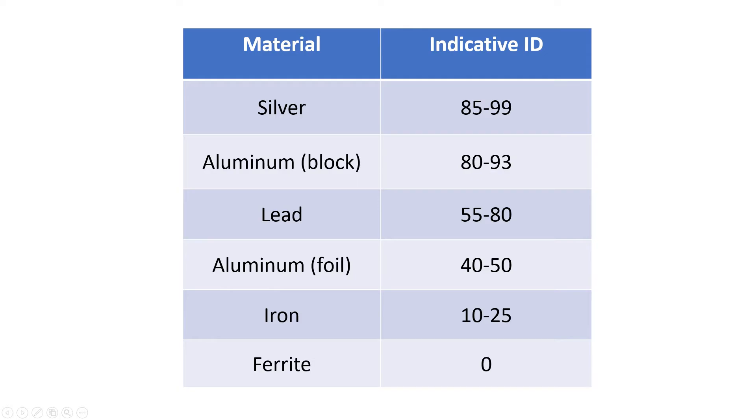But there's definitely a trend when you look at various materials. Like silver objects, they will generally have a very high ID, let's say around 90 or even higher. And aluminum objects can also have very high IDs. But there's a big difference between solid aluminum objects and thin aluminum foil. Thin foil can have an ID as low as 40. And a solid piece of aluminum can have an ID well over 90.